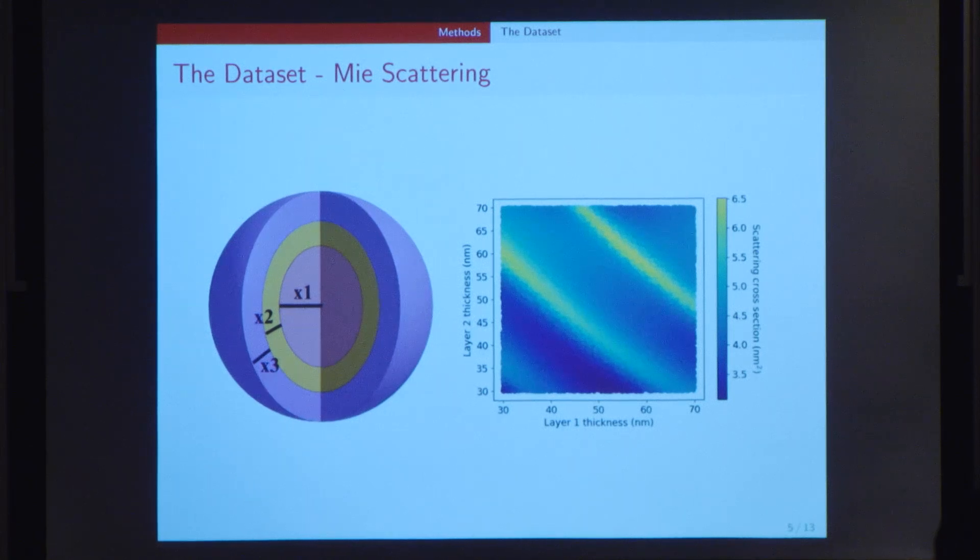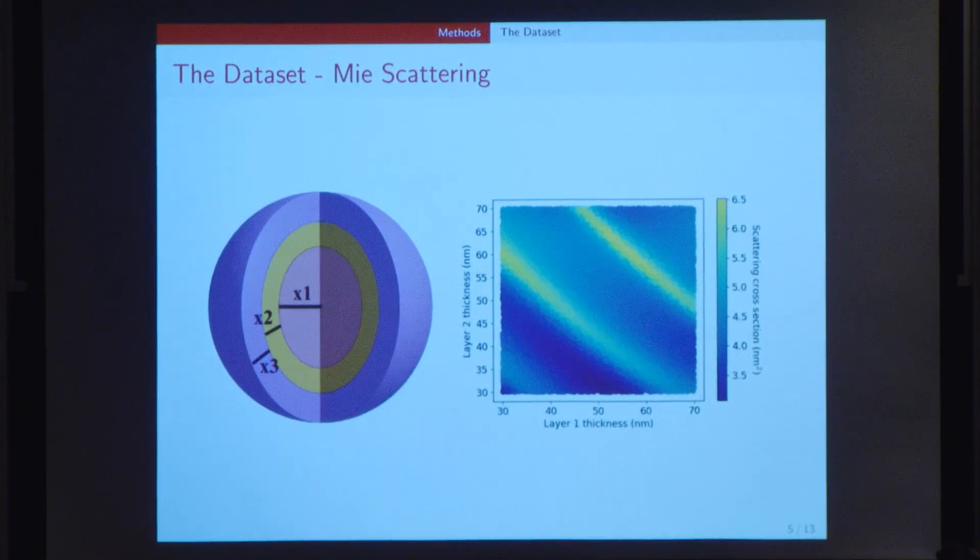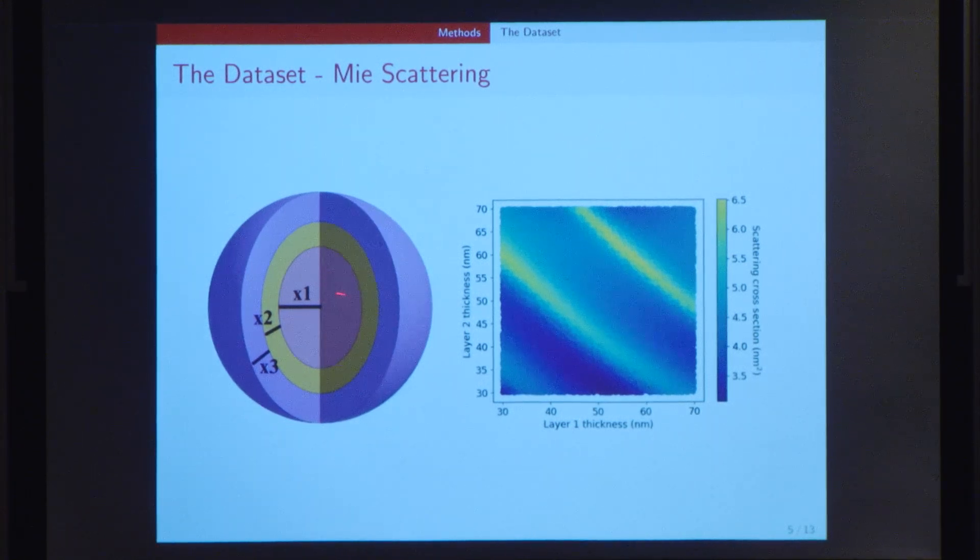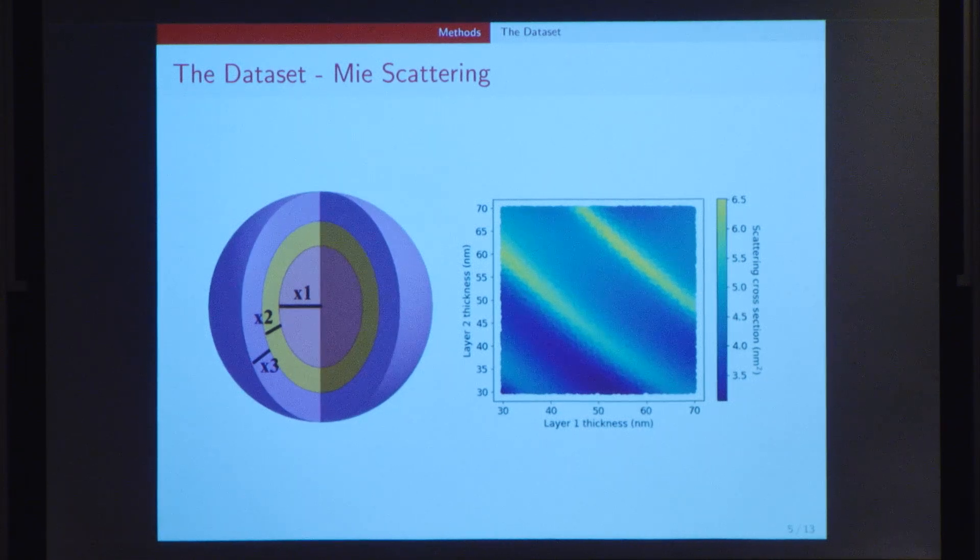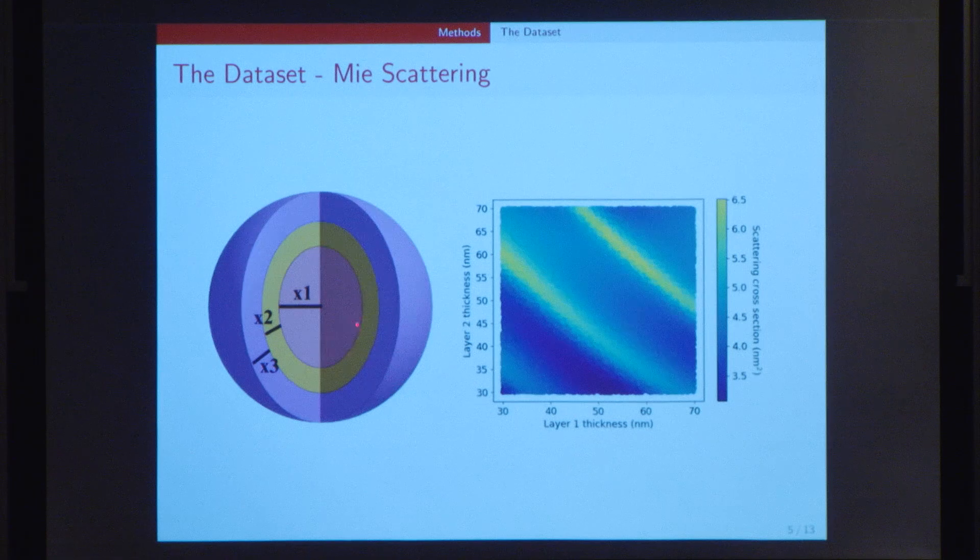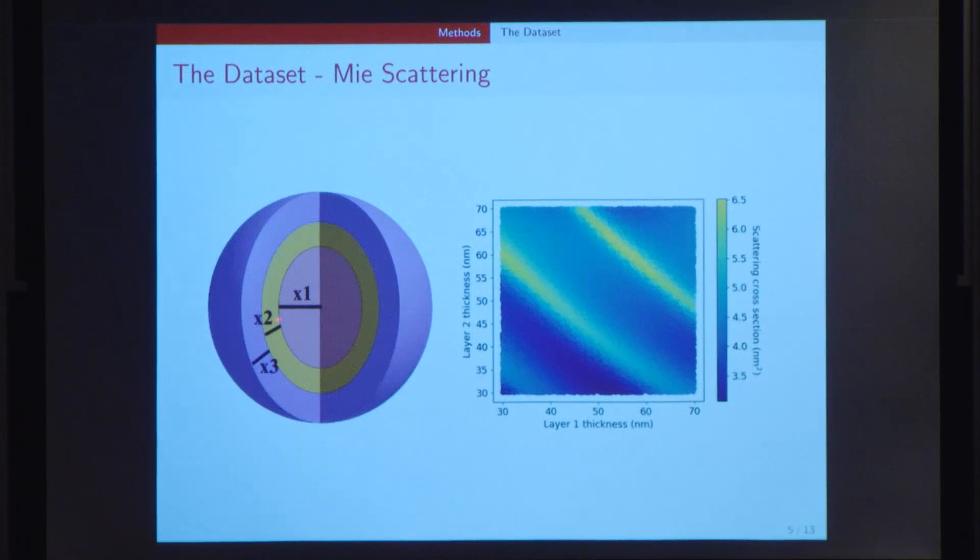The specific dataset that we used in our project is related to the physical phenomenon of Mie scattering. We consider multilayered nanoparticles, where the layers were alternating silica, titanium dioxide, silica, and so on. For example, this is a three-layer nanoparticle, where x1, x2, and x3 are the respective thicknesses of the layers. And these three thicknesses form the input to the algorithm. The output is the scattering cross-section.